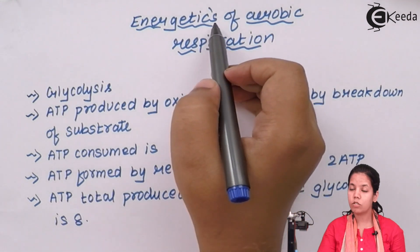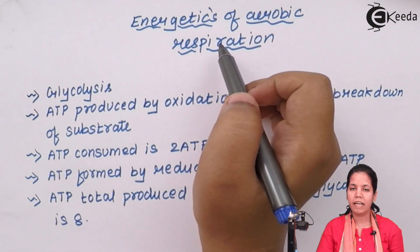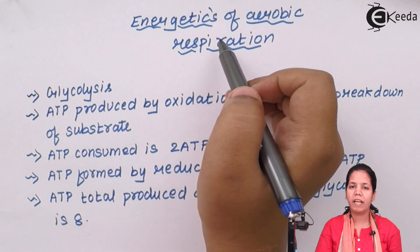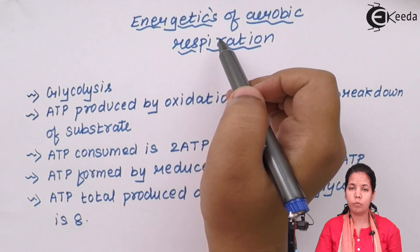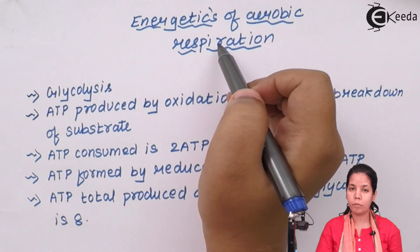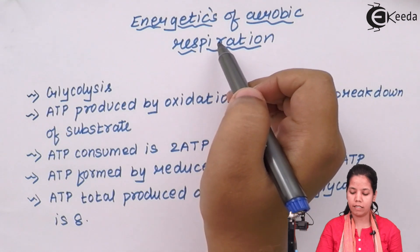Energetics of aerobic respiration means the total amount of ATP consumed, used, and produced during the process of respiration, including all three cycles.